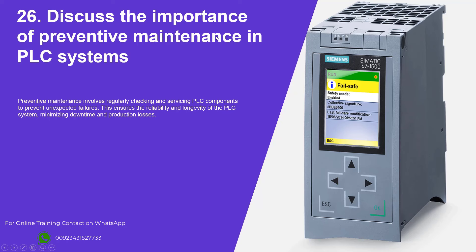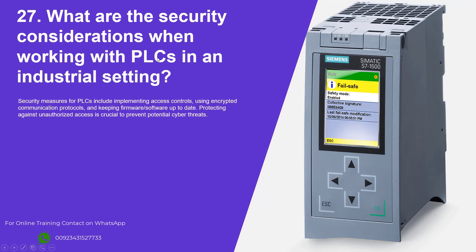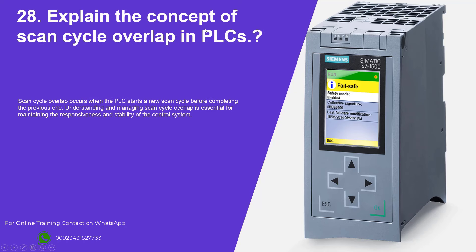Discuss the importance of preventive maintenance in PLC systems. Preventive maintenance involves regularly checking and servicing PLC components to prevent unexpected failures. This ensures the reliability and longevity of the PLC system, minimizing downtime and production losses. What are the security considerations when working with PLCs in an industrial setting? Security measures include implementing access controls, using encrypted communication protocols, and keeping firmware and software up-to-date. Protecting against unauthorized access is crucial to prevent potential cyber threats. Explain the concept of scan cycle overlap in PLCs. Scan cycle overlap occurs when the PLC starts a new scan cycle before completing the previous one. Understanding and managing scan cycle overlap is essential for maintaining the responsiveness and stability of the control system.